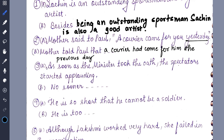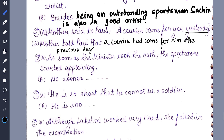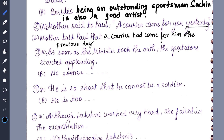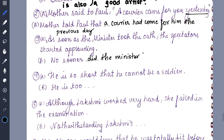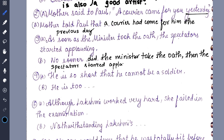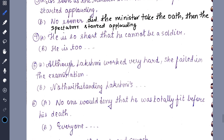'Tomorrow' changes to 'the next day,' 'this' changes to 'that.' 'As soon as the minister took the oath, the spectators started applauding' — convert using 'no sooner': 'No sooner did the minister take the oath than the spectators started applauding.' Also: 'He is so short that he cannot be a soldier' becomes 'He is too short to be a soldier.'